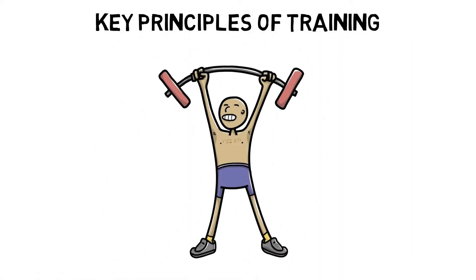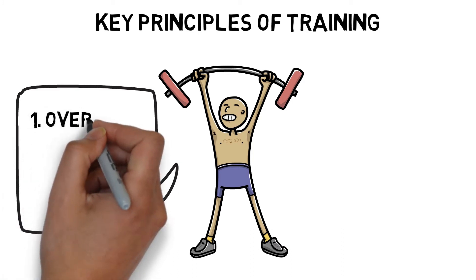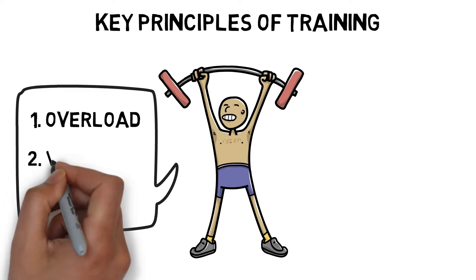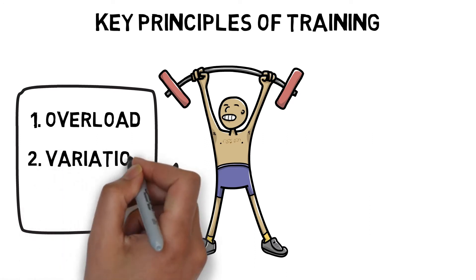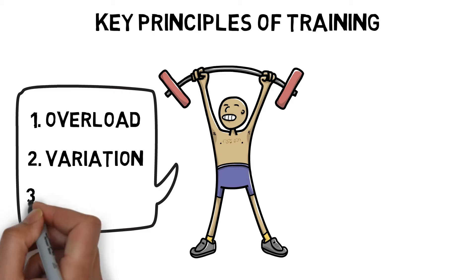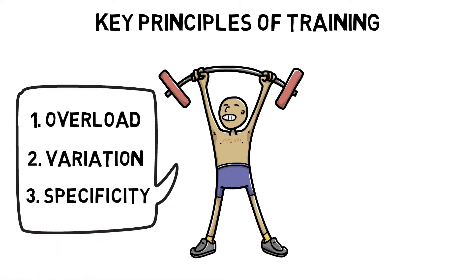There are three key principles of training. Overload is where a stimulus of sufficient strength, duration, and frequency forces an organism to change and adapt. Variation is the manipulation of various training variables. And specificity describes how the body will adapt to the specific demands that are placed on it.